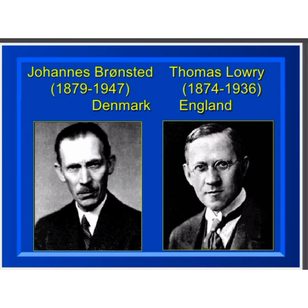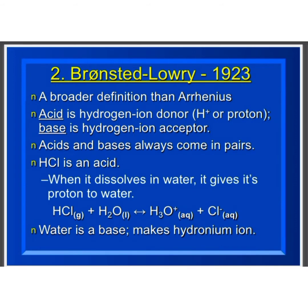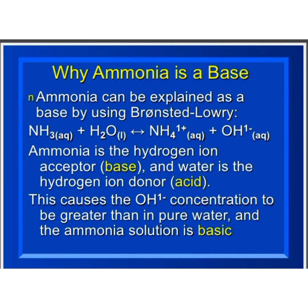The next approach of defining acids and bases was given by Bronsted and Lowry — a broader definition than Arrhenius's. An acid is a hydrogen ion donor, whereas a base is a hydrogen ion acceptor. Acids and bases always come in pairs. Ammonia can be explained as a base using the Bronsted-Lowry concept: ammonia is a hydrogen ion acceptor and water is a hydrogen ion donor, causing the OH⁻ concentration to be greater than in pure water.